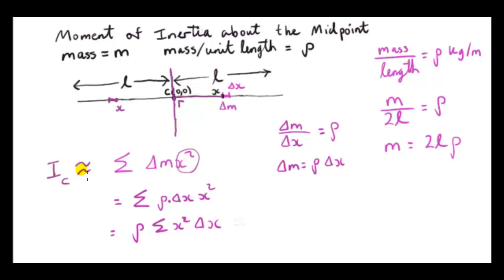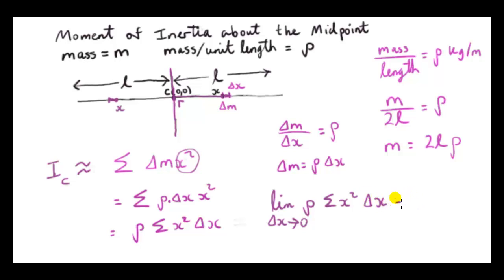The moment of inertia is only approximately given by the discrete sum, because we are dealing with a continuous rod and δm is not infinitesimally small. We must take the limit as δx approaches zero. When we do, the summation sign becomes an integral and δx is replaced by dx, so we are effectively summing infinitely many infinitesimal contributions.